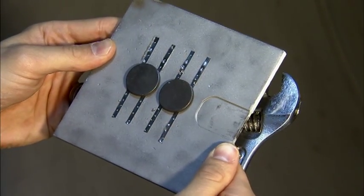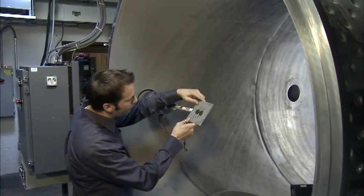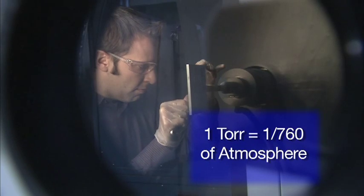During our run process, our samples are mounted to a metallic plate, which is then loaded on our sample mounting arm. The chamber is closed and the entire system is evacuated to a pressure of 1 torr, which is 1/760th of atmosphere.